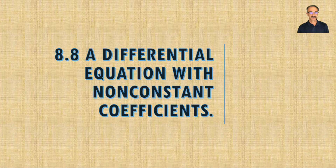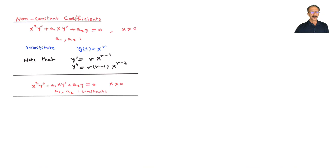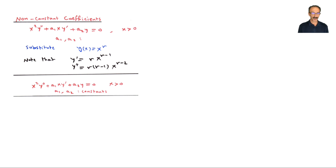This is the last section of chapter 8 on non-constant coefficients. We look at differential equations of the form x² y'' + a₁x y' + a₂y = 0, where x is greater than 0. We substitute y(x) = x^r, so that y' = r·x^(r-1) and y'' = r(r-1)·x^(r-2).